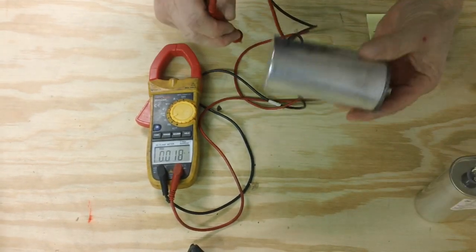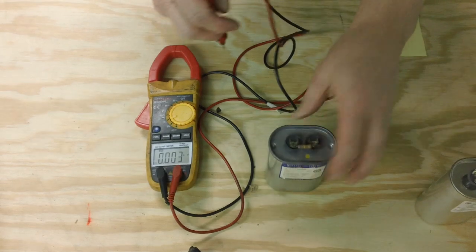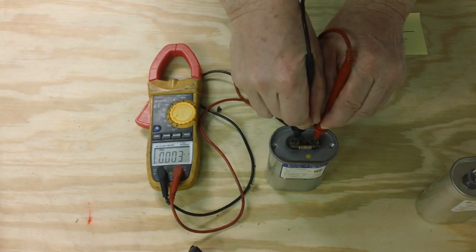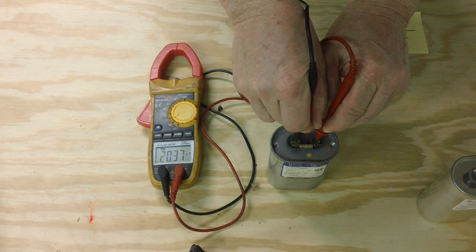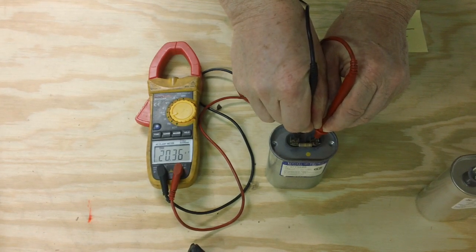Now we have a known weak capacitor. Let's see what it comes up to. It will come up to 20.36.